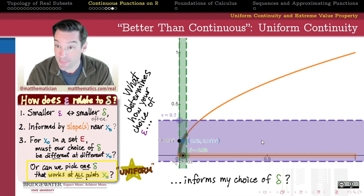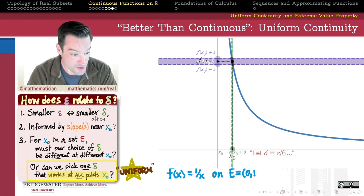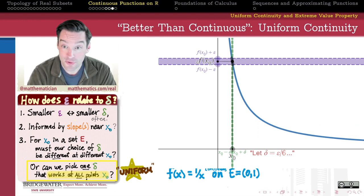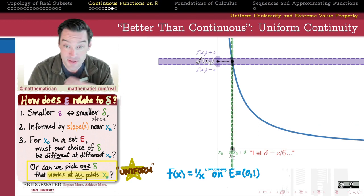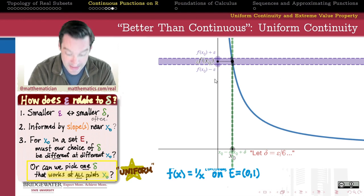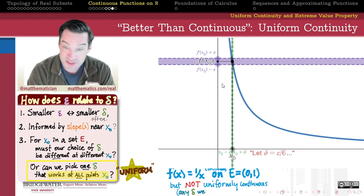And so just to recap the two examples that we've seen up until this point. We had the reciprocal function on the open interval from 0 to 1. That function is continuous everywhere on its domain, right?